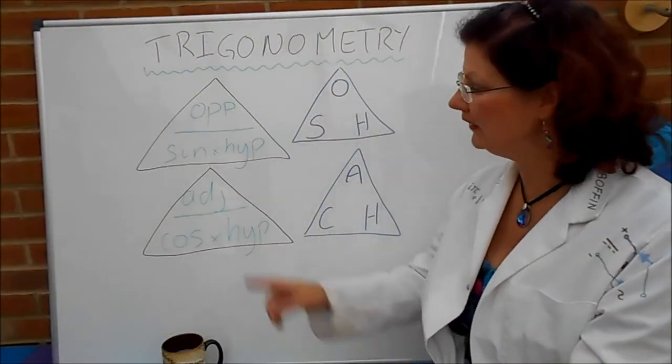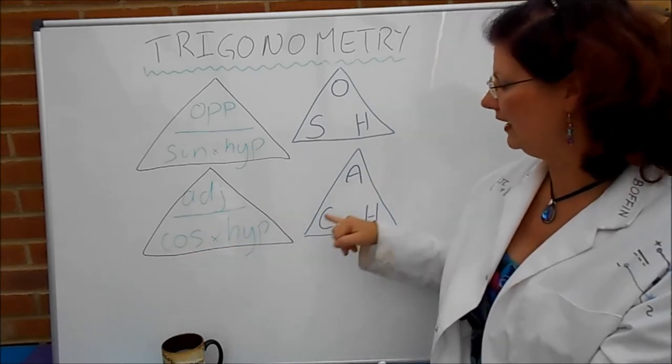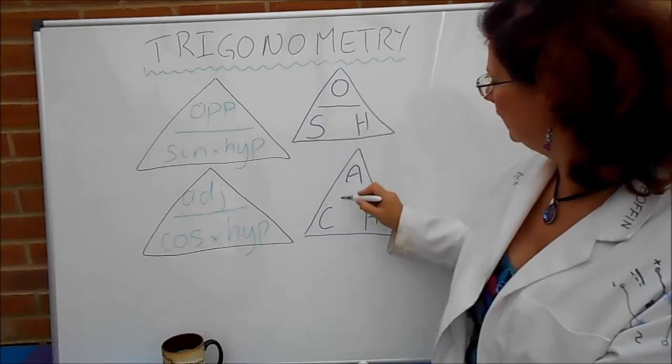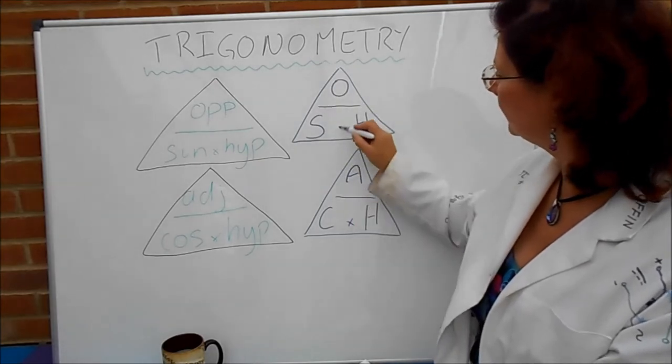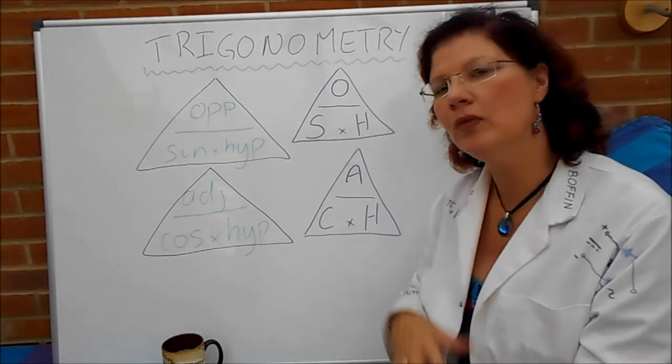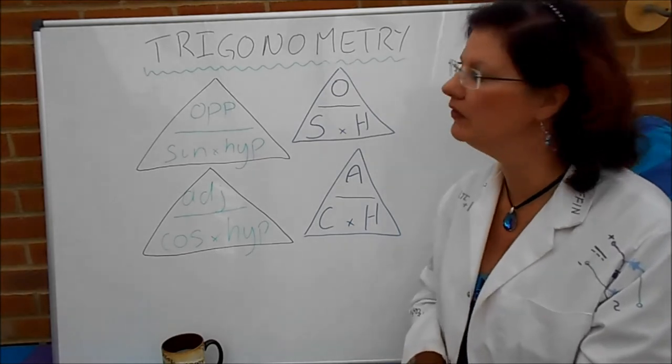Right. You should have something like this. Adjacent is equal to cos over hypotenuse or A, C and H. We need some lines in there don't we? If you're not familiar with formula triangles don't worry about them. I'll show you how to use them. They're actually very easy and a very handy way of doing the formulas.